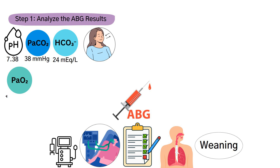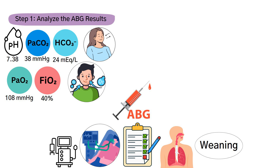A PaO2 of 108 on an FiO2 of 40% is a good oxygenation level, which suggests that oxygen delivery is adequate. Therefore, this ABG shows stable gas exchange with the current ventilator settings.